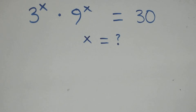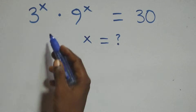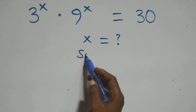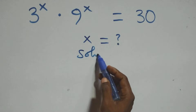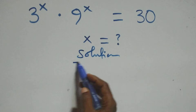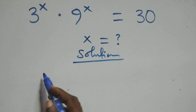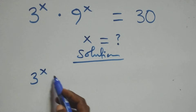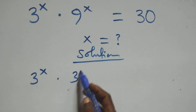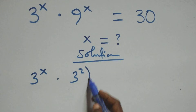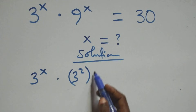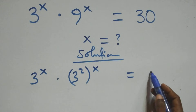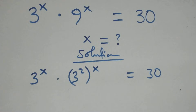Hello, you are welcome. How to solve this equation. From here, what we have we can write this as 3 raised to power x times 9 plus 3 squared which is raised to power x, equals to 30.